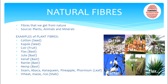Natural fibers, as the name suggests, are fibers obtained from nature. The sources can be plant, animal, and mineral. Examples of plant fibers include cotton, kapok, coir, flax, jute, kenaf, ramie, hemp, sisal, abaca, henequen, pineapple, phormium, wheat, maize, and rice. Cotton and kapok fibers come from seeds; coir from fruit; flax, jute, kenaf, ramie, and hemp from the bast; and sisal, abaca, henequen, and pineapple from the leaf.